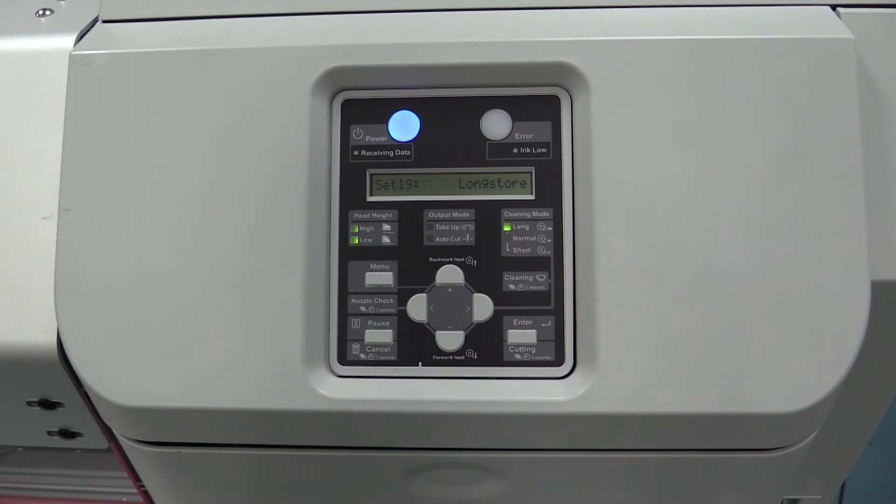Setting 19 is long store. This is what you'll do if you need to shut down the printer, if you're going more than 7 days without printing. You need to use the long store function. This will give you prompts to remove all your inks. It will drain the system completely. It will then prompt you to put in your cleaning cartridges so that it can start flushing out the system.